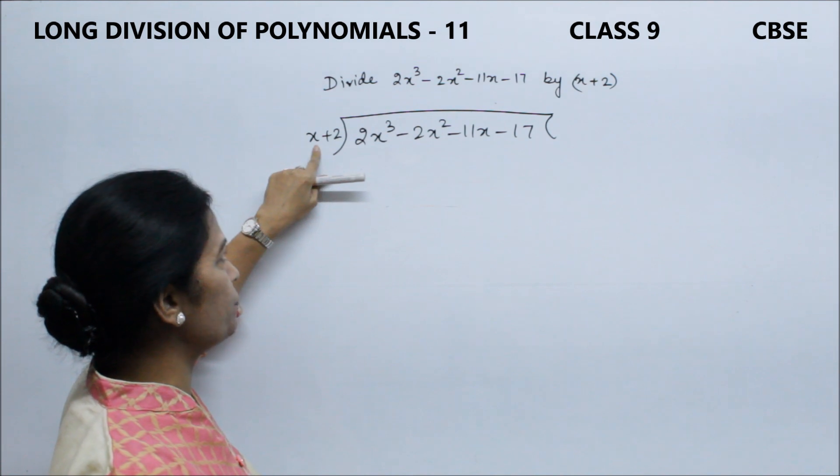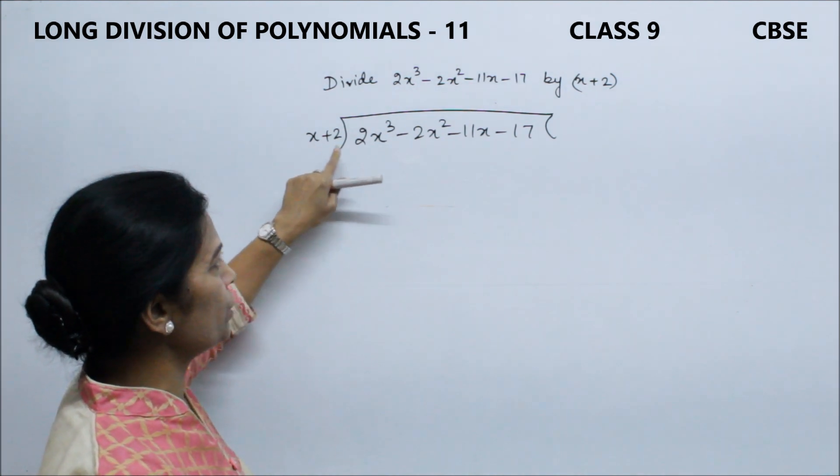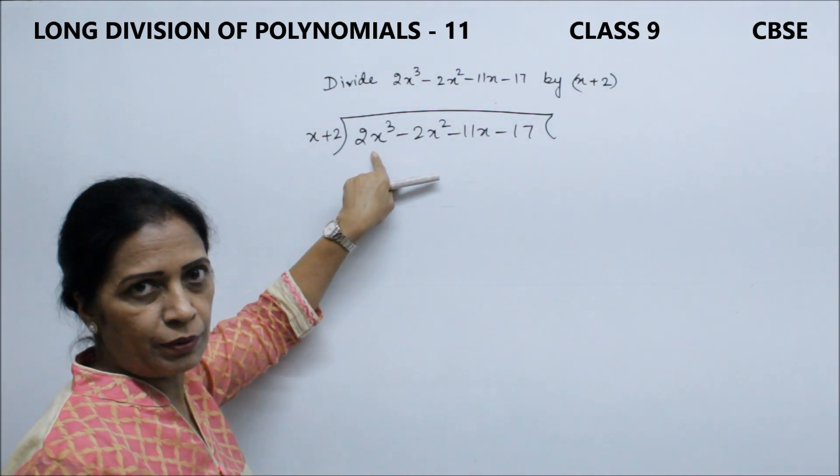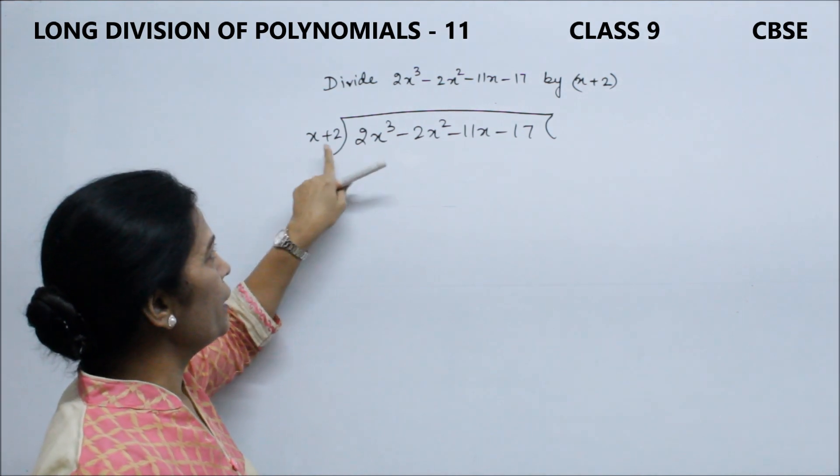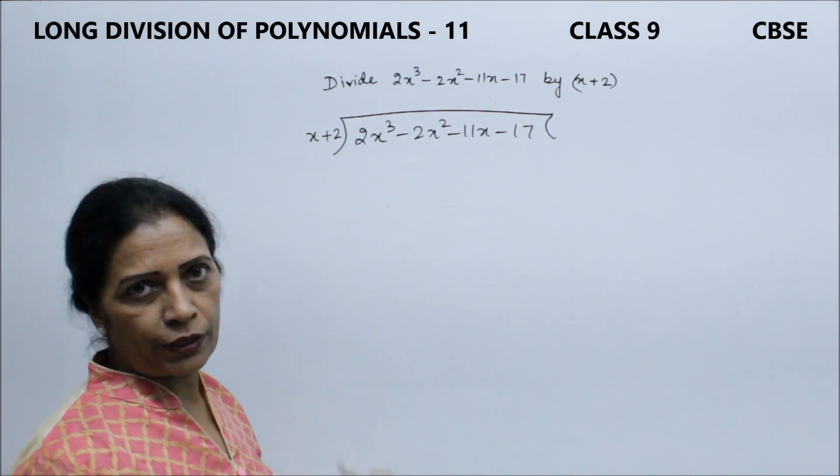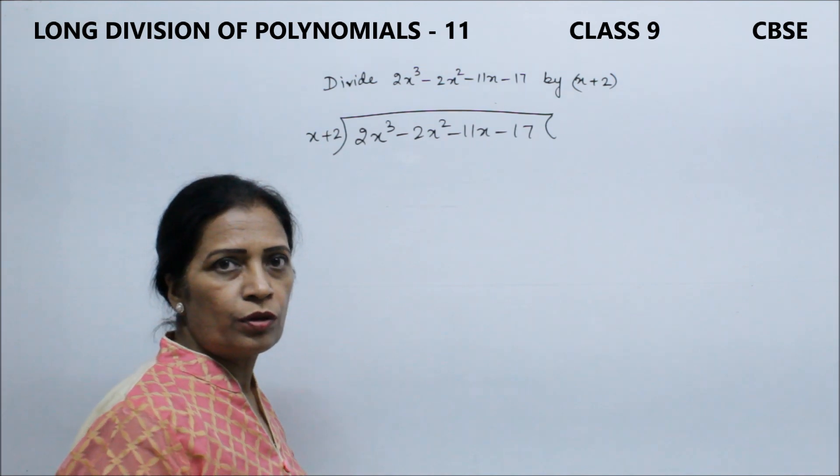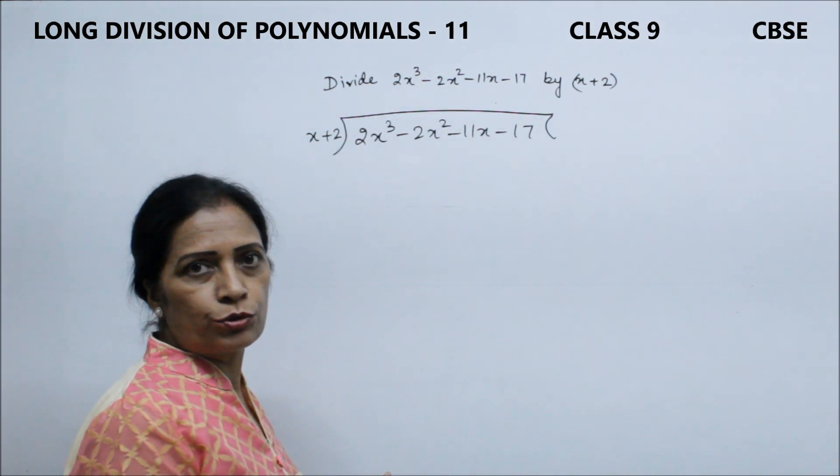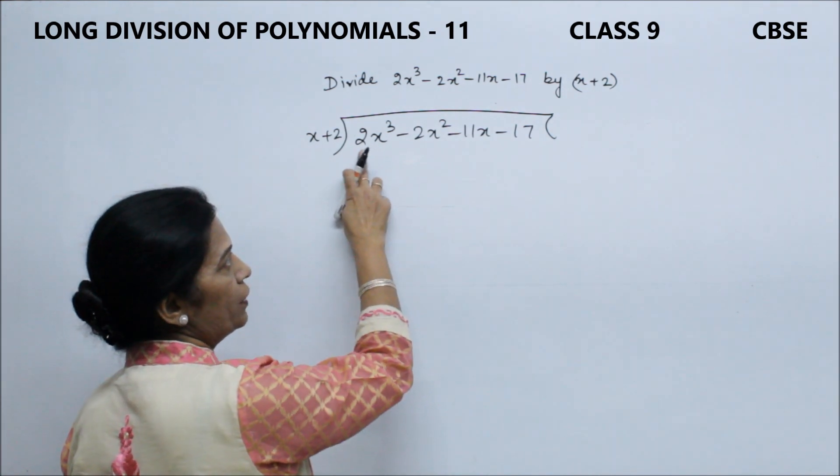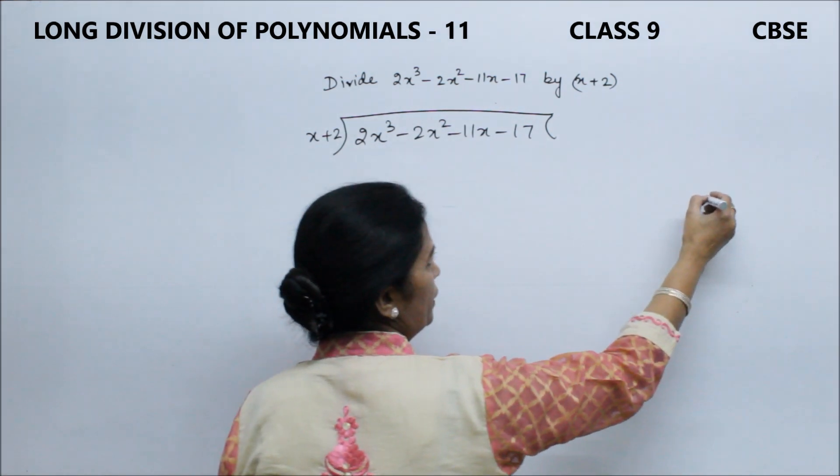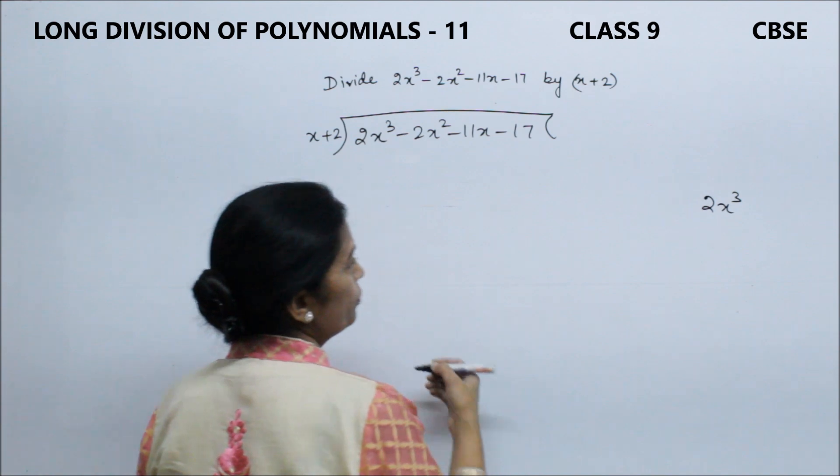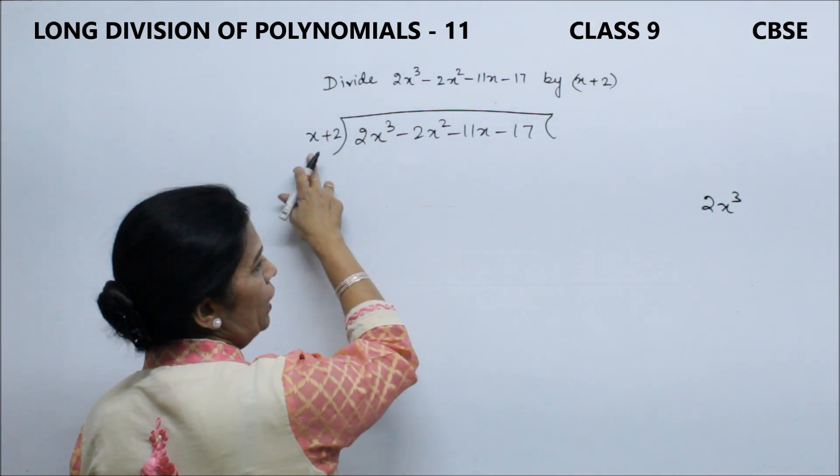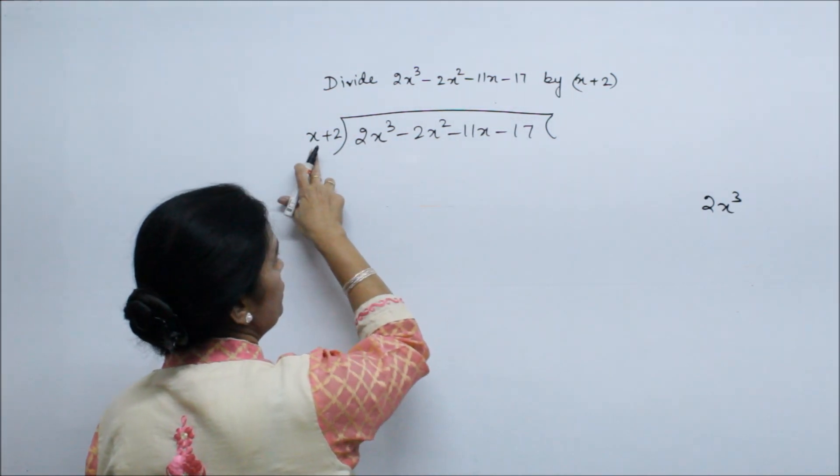Here, x³ highest power is the first one, and x highest power here is the first one. So let's see, x will multiply 2x³. Many of you will know that, but if you have doubt about it, what do you do? First number, highest power here is 2x³, okay. Then here is x power, highest value.